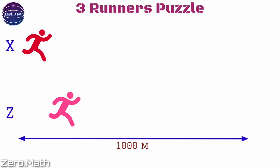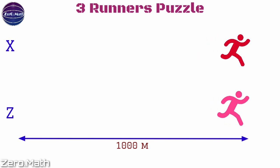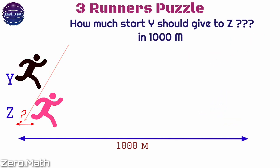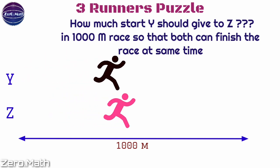If X and Z are competing, then X gives Z a start of 69 meters so that X and Z will finish the race in the same time. The puzzle is: if Y and Z are competing each other, then how much start should Y give to Z so that both of them can finish the race at the same time?